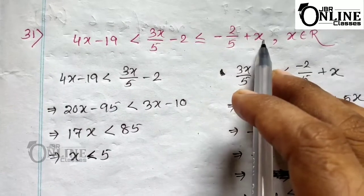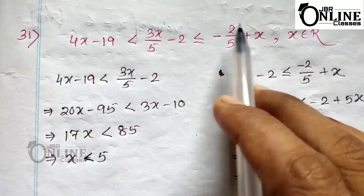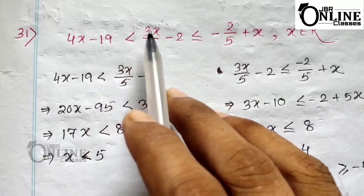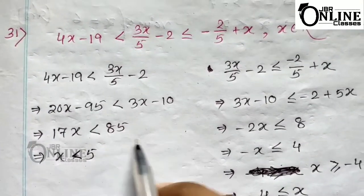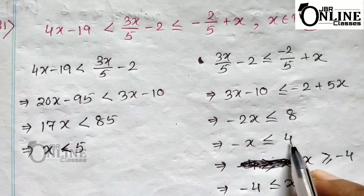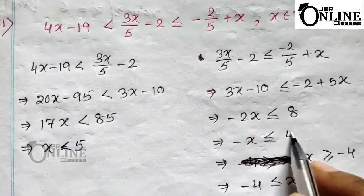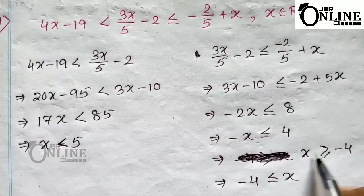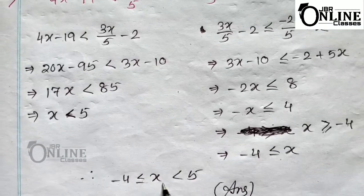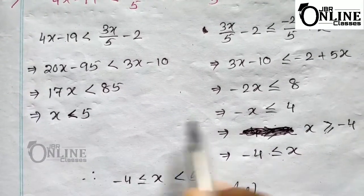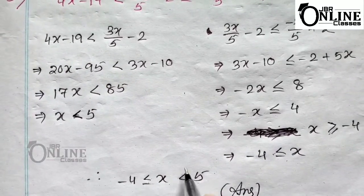Sum number 31: 4x − 19 < (3x/5) − 2 ≤ −2/5 + x, where x ∈ R. Separate into two parts. From the first portion you get x < 5, and from the second portion you get −x ≤ 4, which gives x ≥ −4, or equivalently −4 ≤ x. Combining both parts, the solution set is −4 ≤ x < 5.